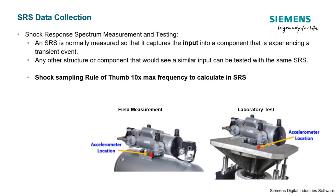This is a good example of why we need to do shock testing on our products. It looks like they did a good job of testing that iPhone because it survived what looks to be about a three to four foot drop. So that's the introduction, that's the background. Now we're going to get into this thing called an SRS and how it's calculated. SRS is shock response spectrum.